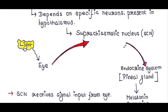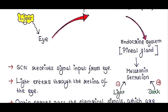The SCN receives signal input from the eye. Light enters through the retina of the eye. Optic nerves pass electrical signals, which are converted to chemical signals in the SCN. Finally, the SCN generates output in the form of hormones via the endocrine system.